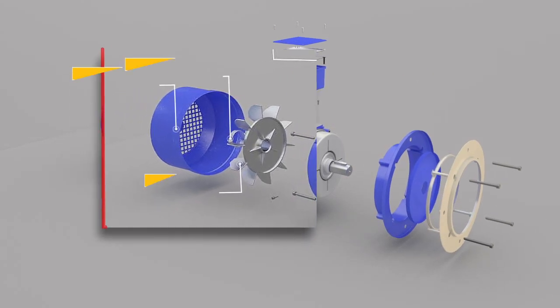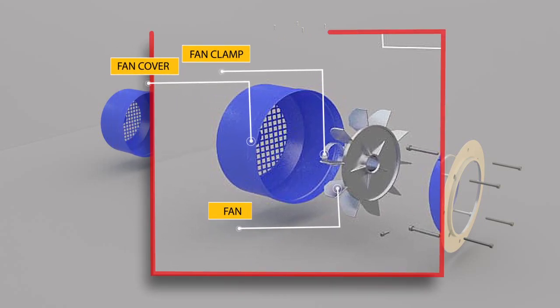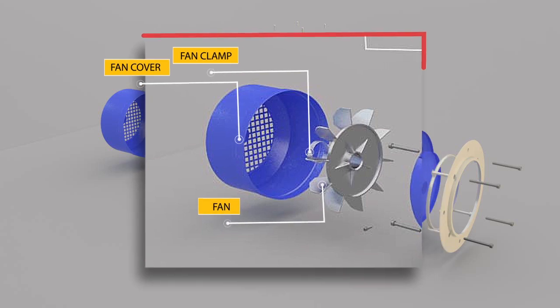The fan sucks air into the motor, blowing it around the outside of the case past the heat ventilating fins. If you've ever wondered why electric motors have those ridges on the outside, that's the reason. They're cooling the motor down. Fan cover prevents it from being damaged and the fan clamp is holding fan on rotor shaft on right place.